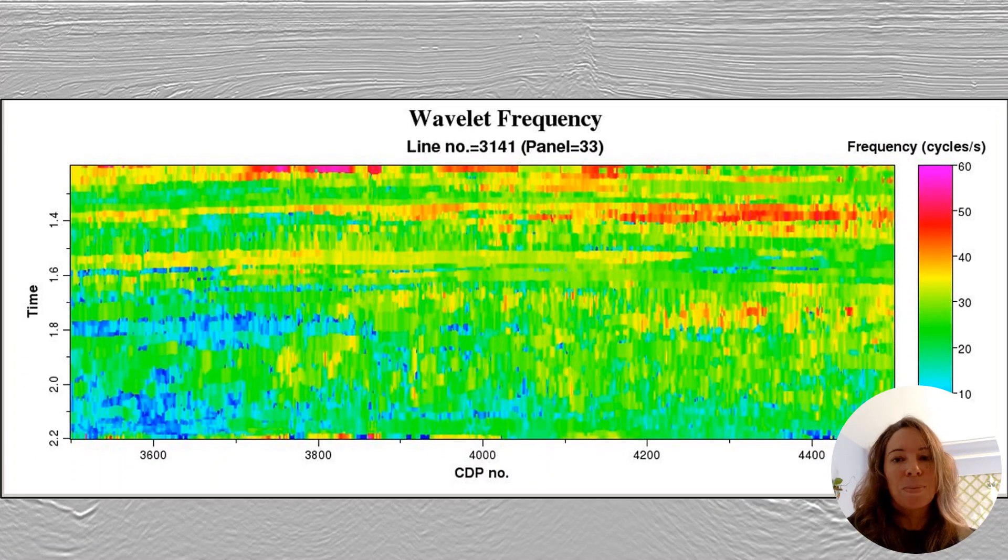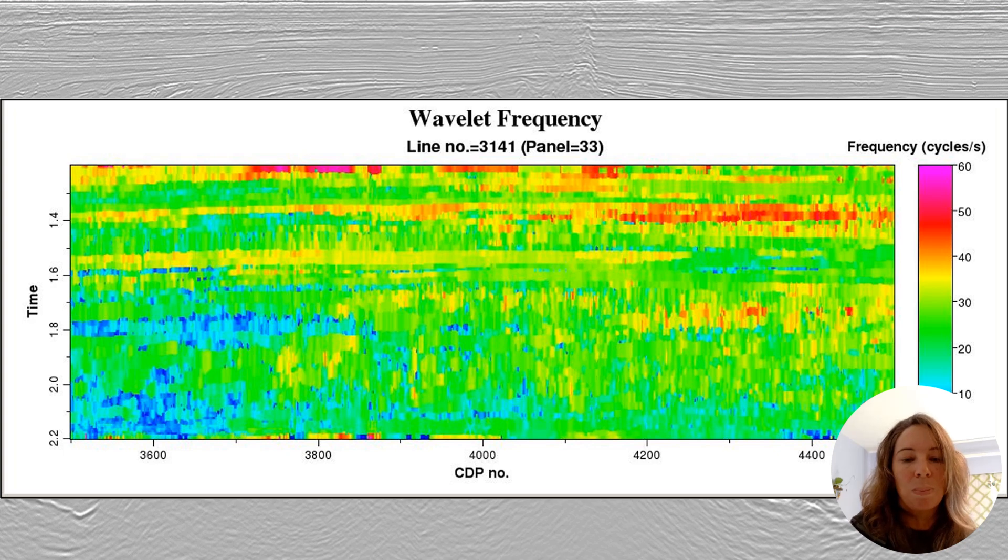Wavelet frequency captures the frequency content at points of maximum reflection strength and extends those values between the envelope minima, offering a more robust frequency estimate than conventional instantaneous frequency. This approach reduces the wild fluctuations that you can often see in instantaneous frequency calculations, particularly in areas of weaker signal, like the deeper section. Let me jump back to instantaneous frequency so you can compare and contrast between the two.